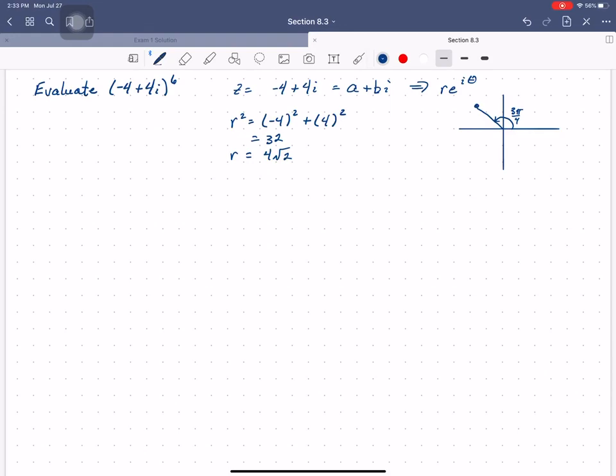So now what? Well, remember that a over r, so negative 4 over 4 square root 2 equals cosine theta. And b over r equals sine theta, which means that negative 1 over square root 2 is cosine theta.